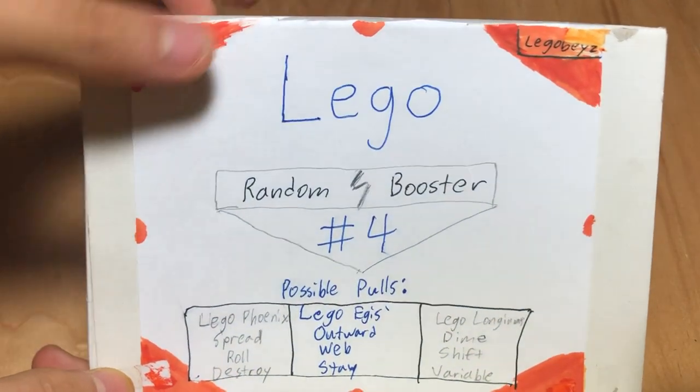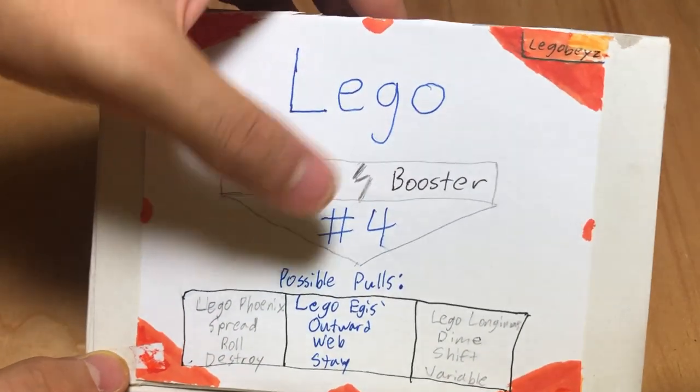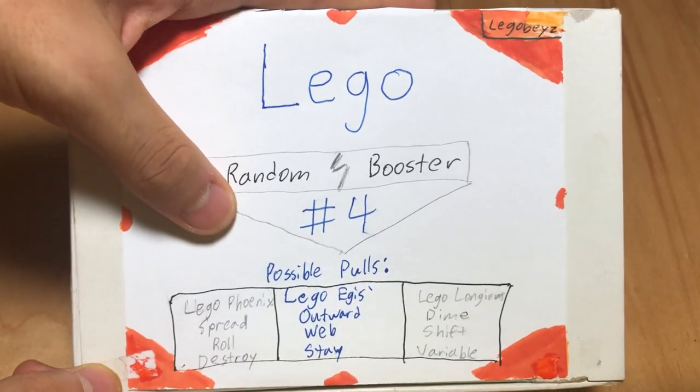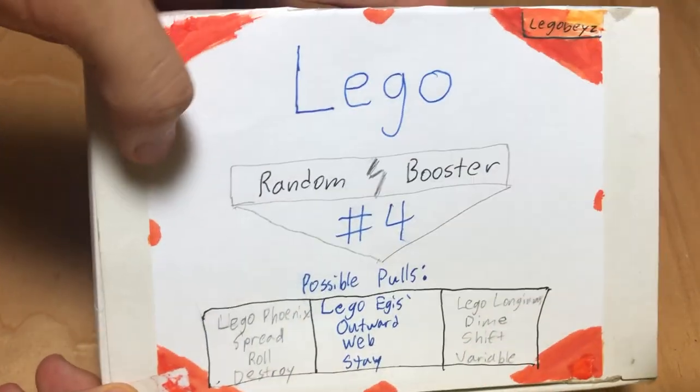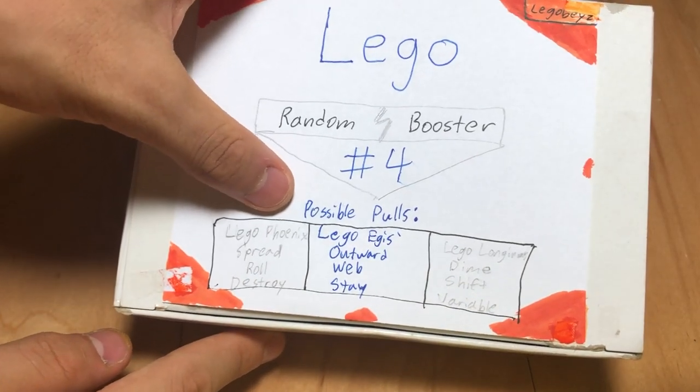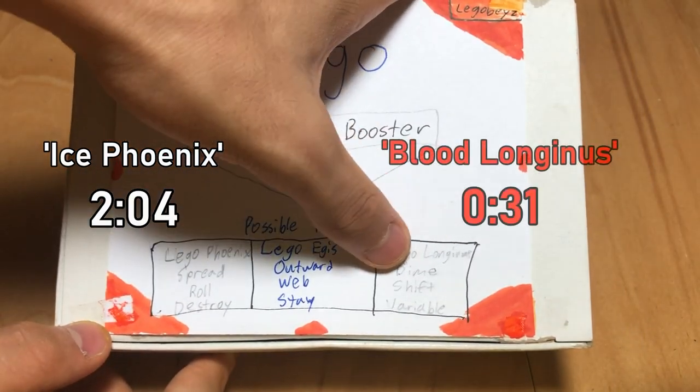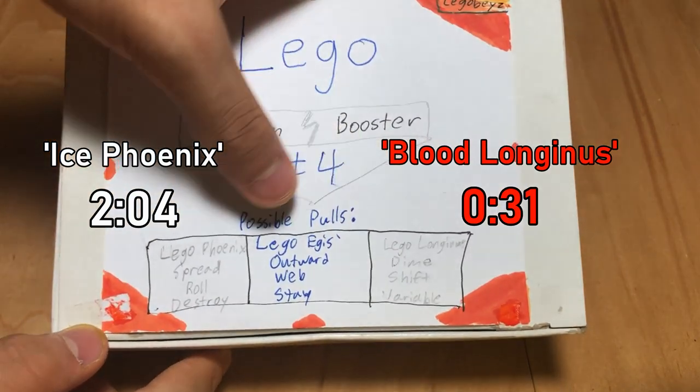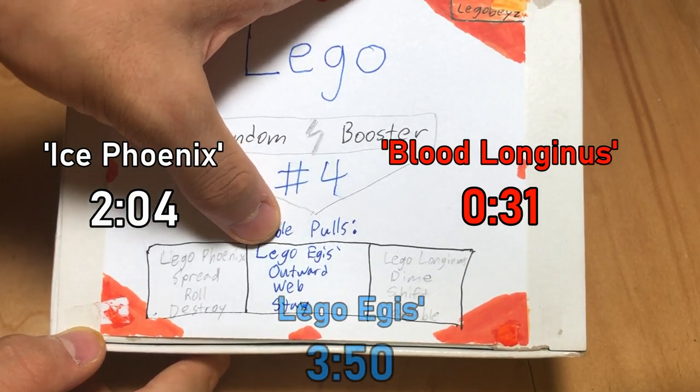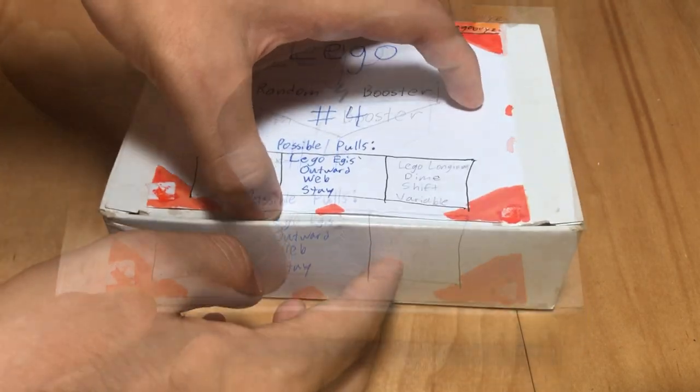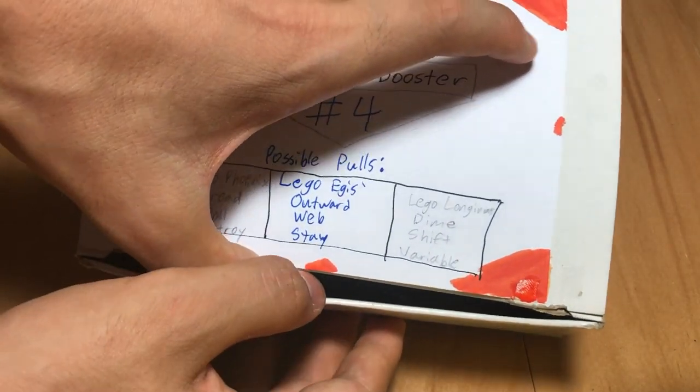Today we are unboxing LEGO Random Booster number 4, and wow, it's been quite a few LEGO Random Boosters so far. Today we have LEGO Phoenix Spread Roll Destroy, LEGO Longinus Dime Shift Variable, and our prize bay, LEGO Aegis Dash Outward Web Stay. Alright, first pool we have Longinus.